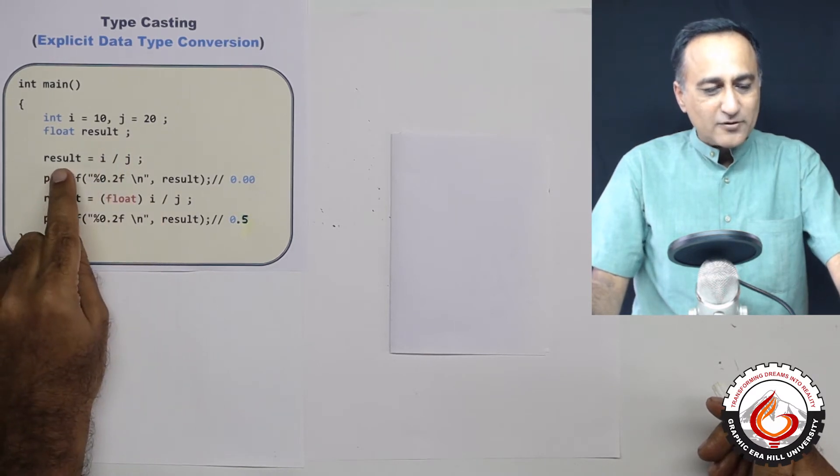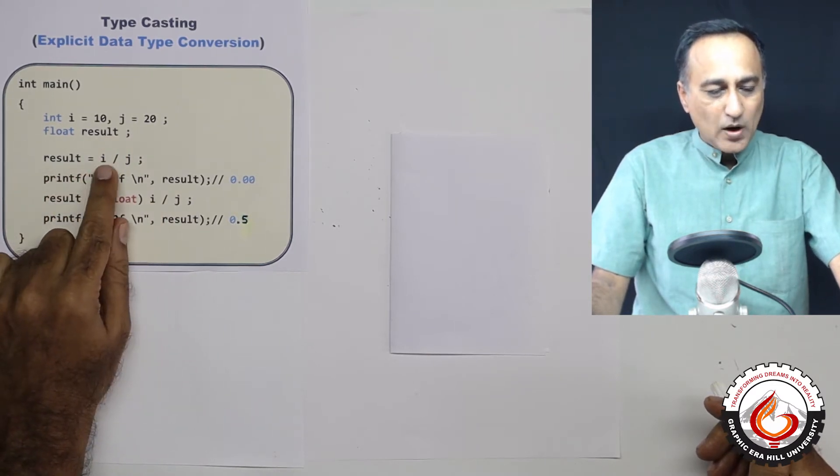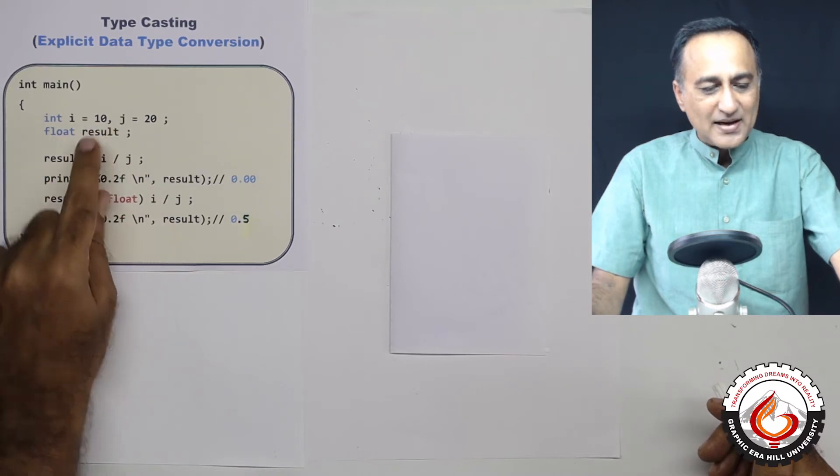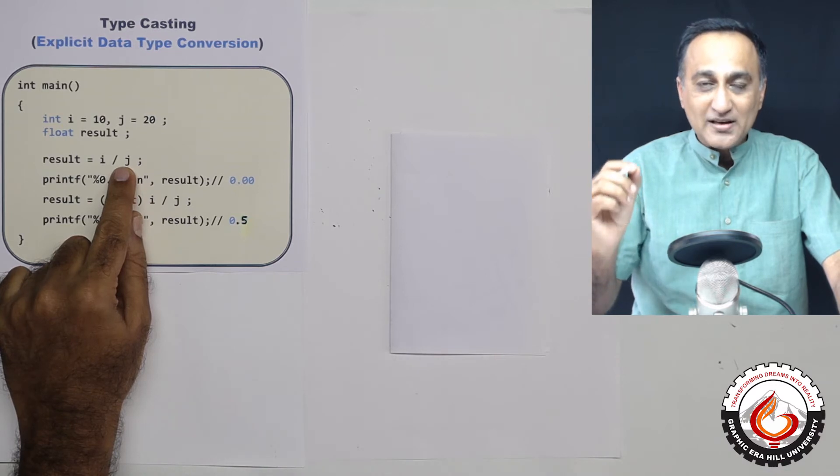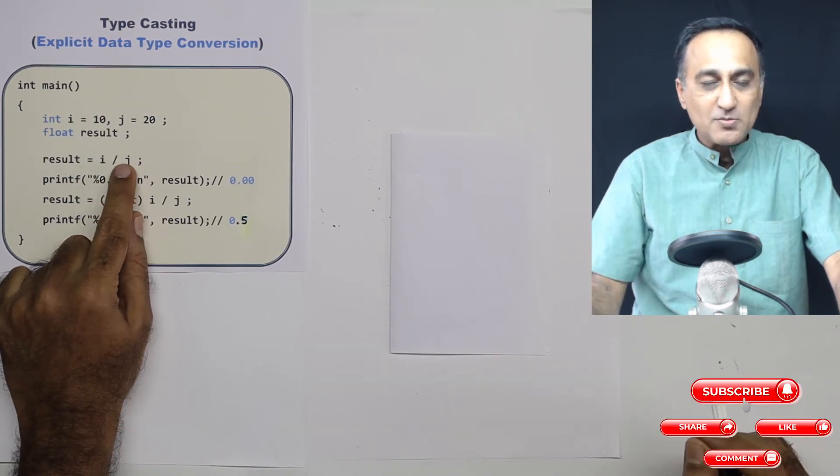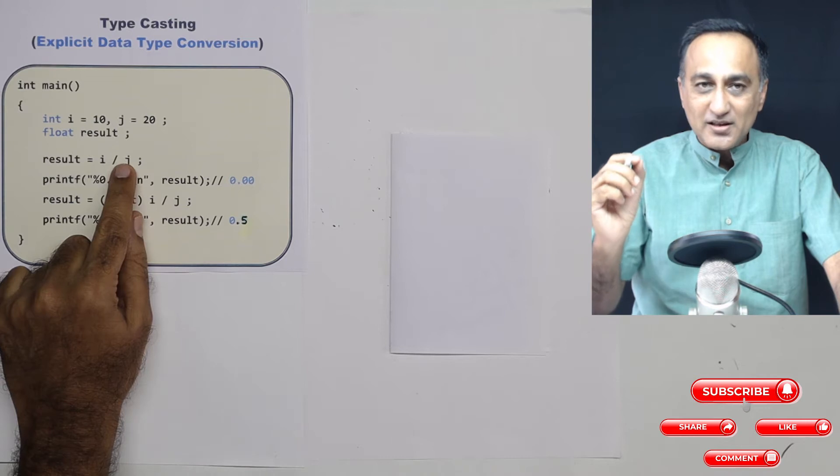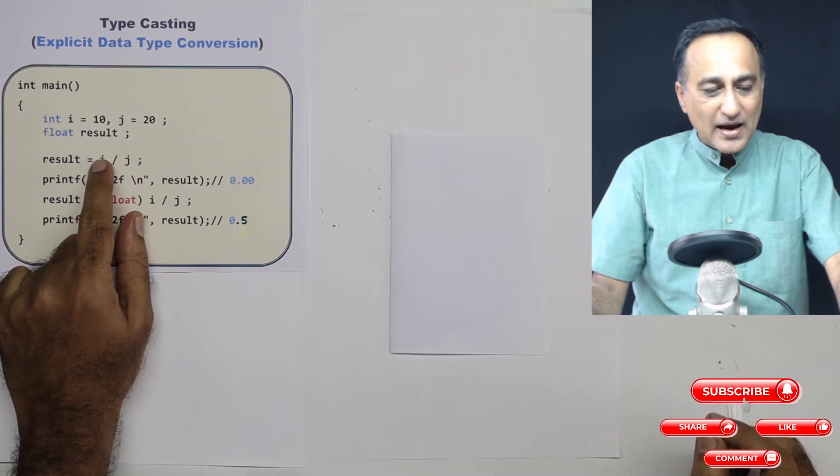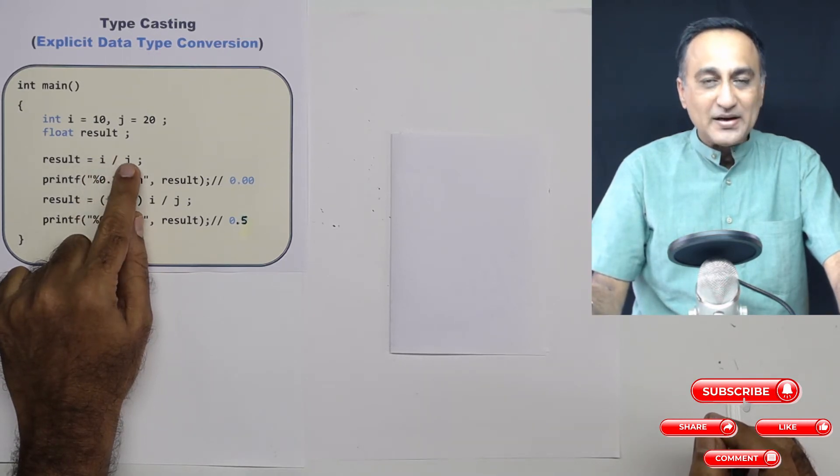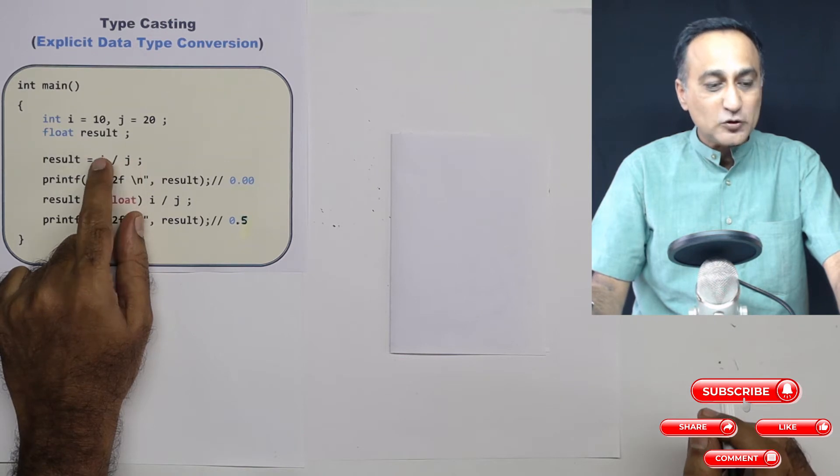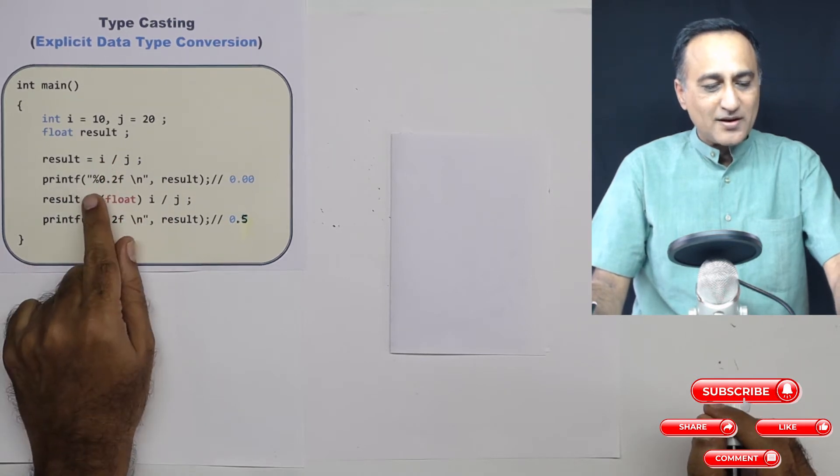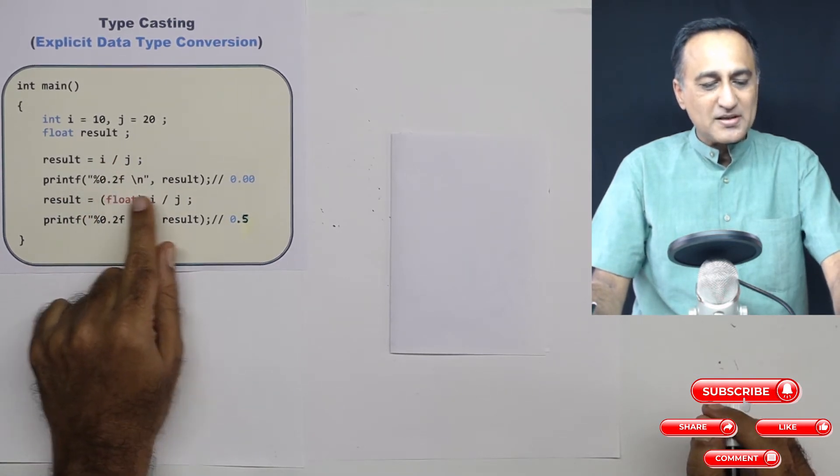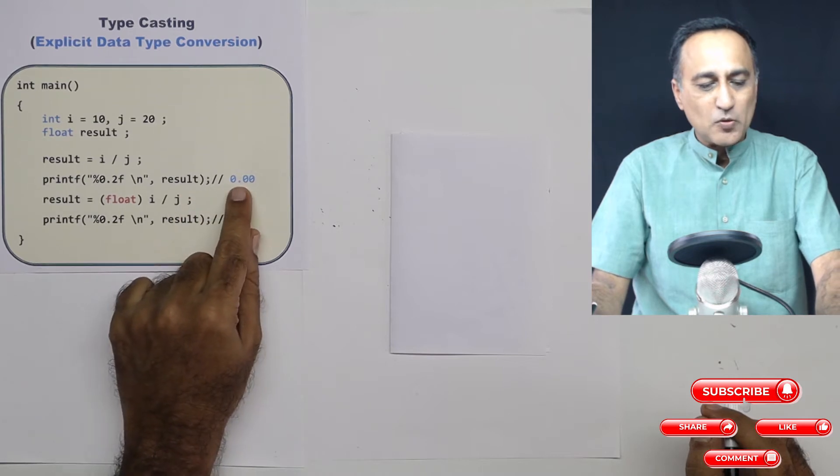Although result is of the floating data type, if I do i upon j, since both i and j are integers, the result of integer division is also going to be an integer. So when I divide i by j, 10 by 20, it is not going to be 0.5, it is going to be 0. Because in integer division, there is no fractional parts. If you print only two decimal places, it's going to print result as 0.00.